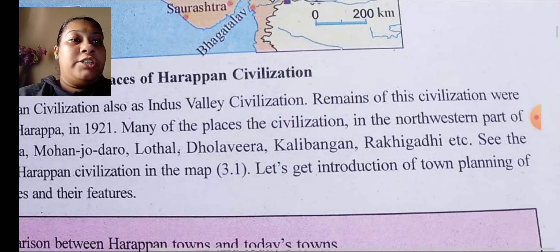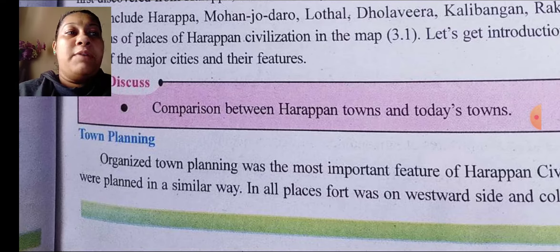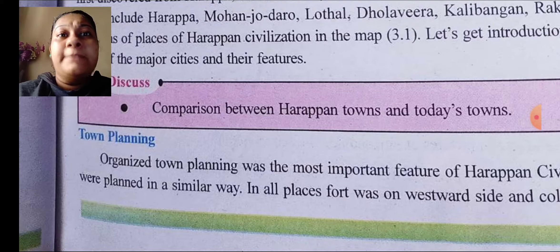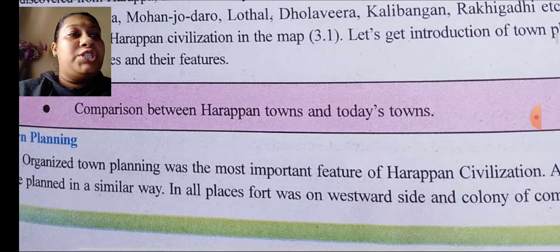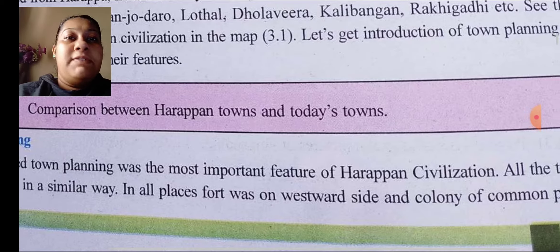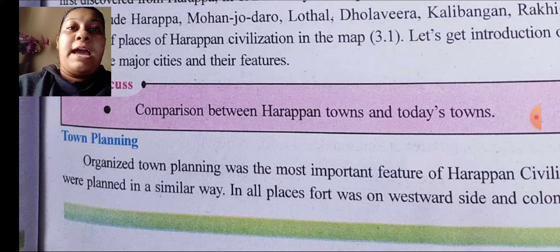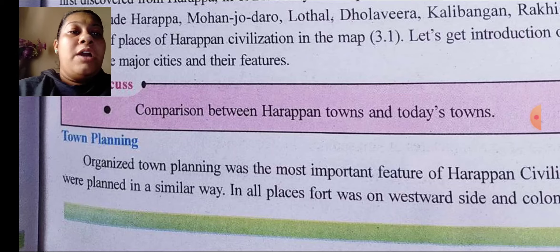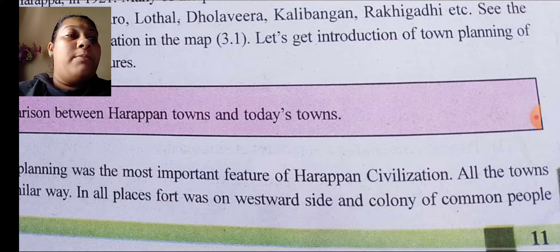Let's get an introduction to the town planning of some major cities and their features. Organized town planning was the most important feature of Harappan civilization. All the towns were planned in a similar way — meaning all the towns were laid out the same.